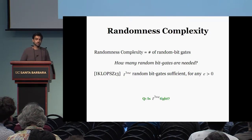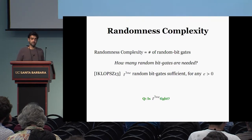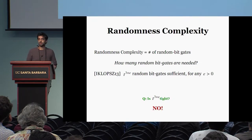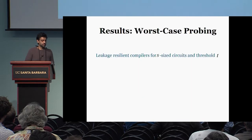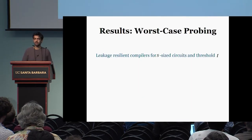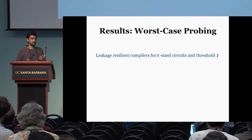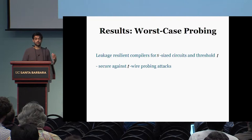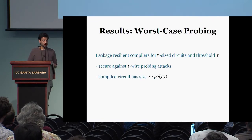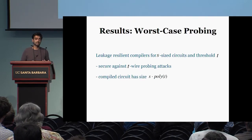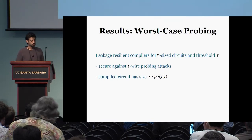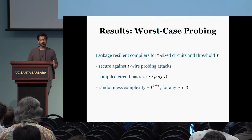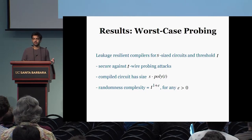A natural question is whether T^(3+ε) is tight. In this work, we answer this question and the answer is no. In particular, we show the following result: there exist leakage-resilient circuit compilers for S-size circuits and threshold T that resist T wire probing attacks. The size of the compiled circuit is S times polynomial in T, and the randomness complexity used is only T^(1+ε).